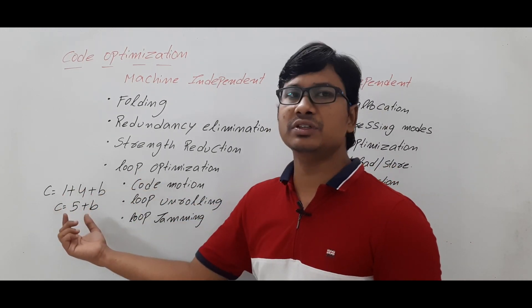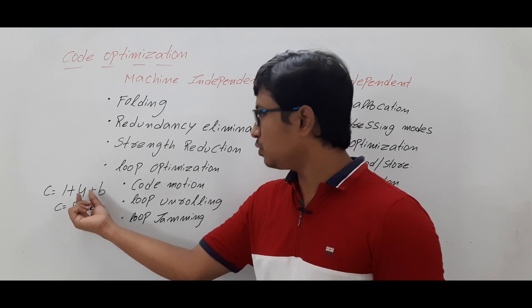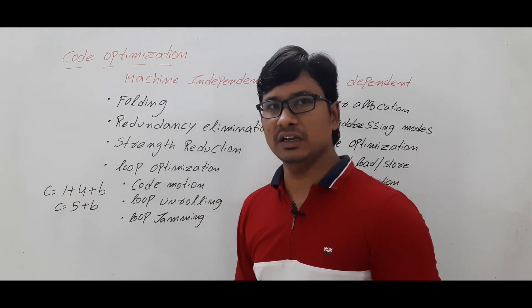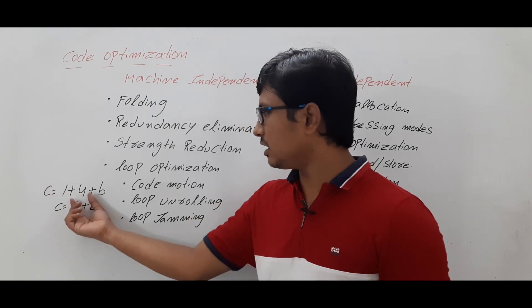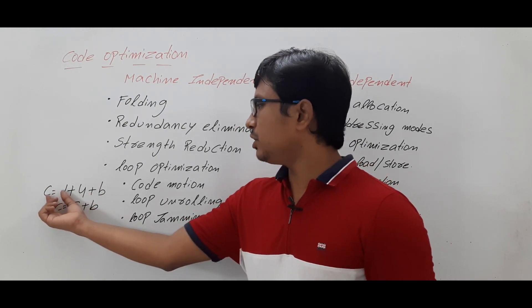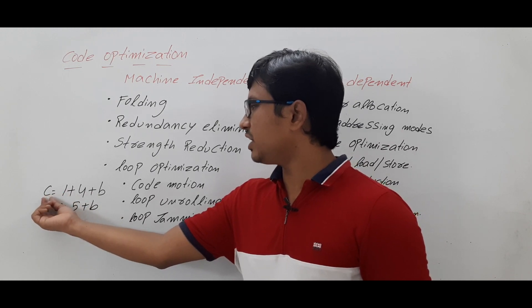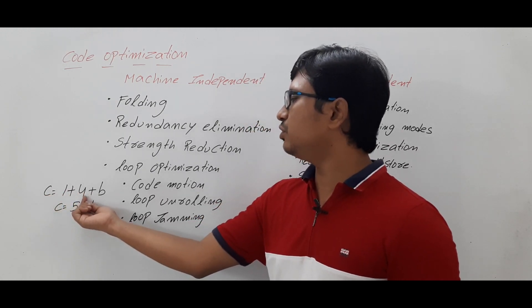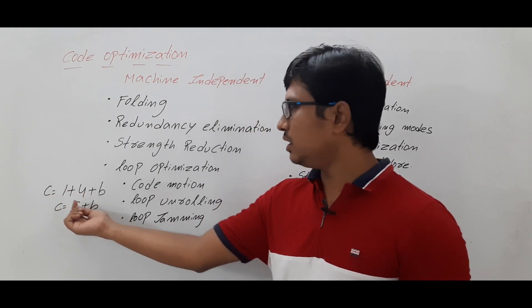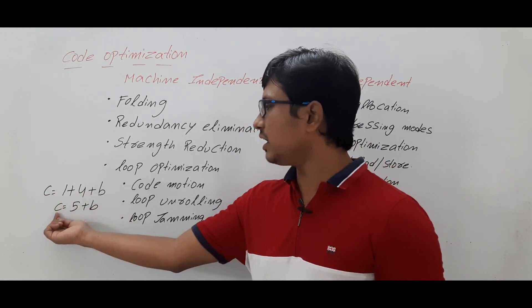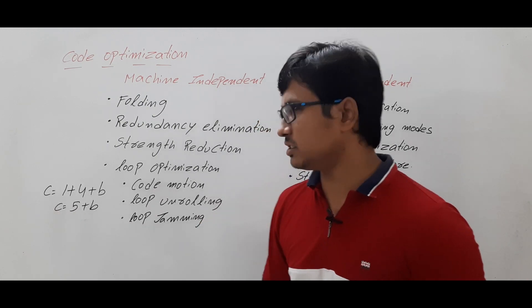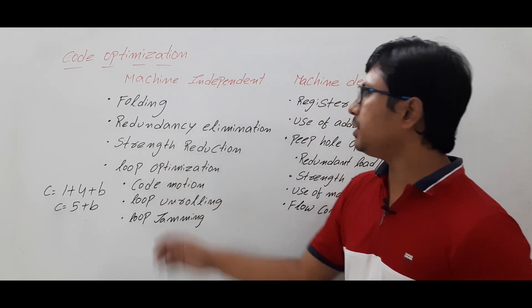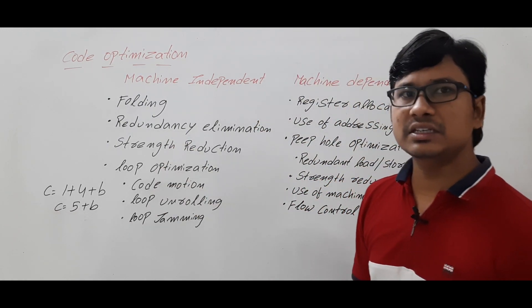You know that 1 plus 4 is 5, but you don't know the B value, so you are not computing the C value directly. Instead of writing C is equal to 1 plus 4 plus B, you can directly write C is equal to 5 plus B.